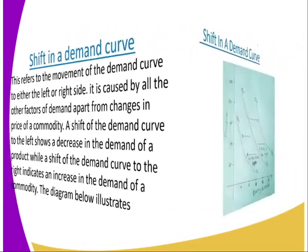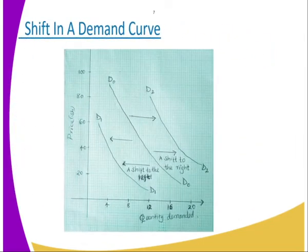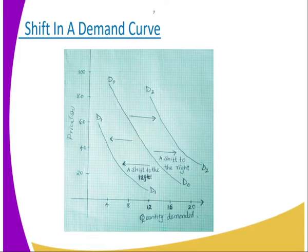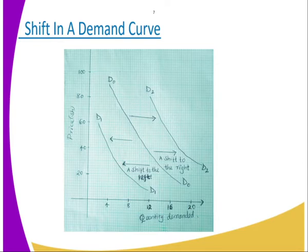Let us get a diagram to illustrate that. As you can see, we have D0, D1, and D2. When the demand curve shifts from D0 to D1, that is towards the left hand side, the demand has decreased. But when it shifts towards the right hand side, you are going to see that the demand has increased. That is the shift in a demand curve.